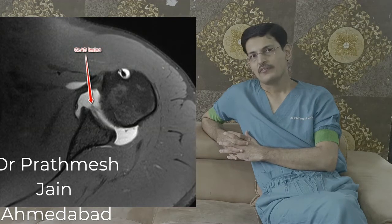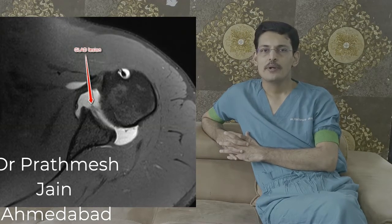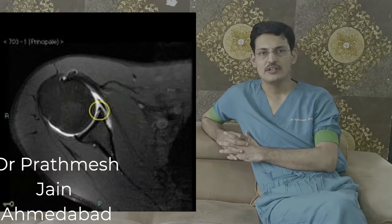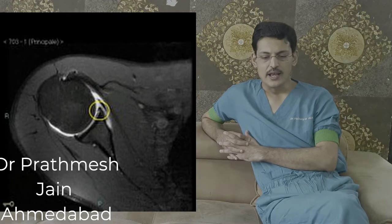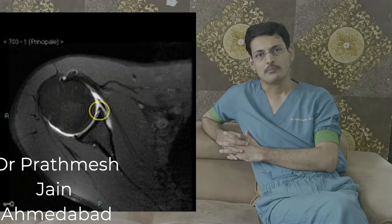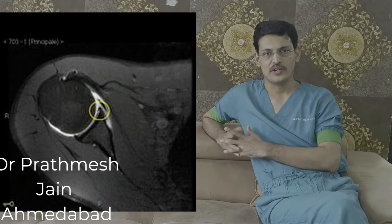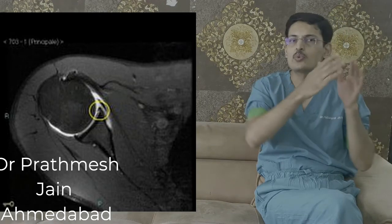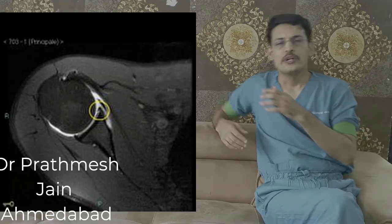The full form of GLAD lesion is Glenoid Labral Articular Defect. The mechanism of injury is a forced adduction in an abducted and externally rotated arm. It is usually an impaction kind of injury in which the ball pushes on the socket in a manner that it damages the cartilaginous portion there. The lesion is quite close to the labrum, so it is almost similar to a labral injury.